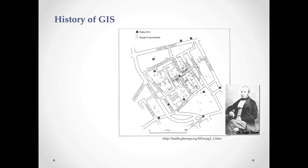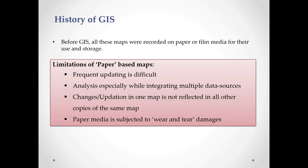In this way, people started using maps to mark different locations and different events before GIS. All these maps were recorded on paper or film media for their use and storage. The limitations of paper-based maps are: frequent updating is difficult, analysis while integrating multiple data sources is hard, changes in one map are not reflected in all other copies, and paper media is subjected to wear and tear.